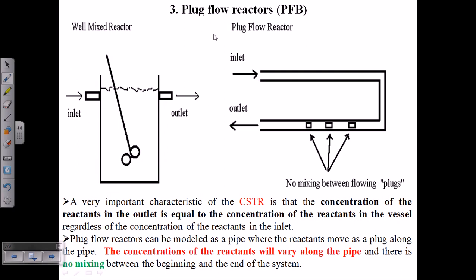In this plug flow bioreactor, this type of bioreactor is used not for liquid processing but for solid handling or solid processing. In wastewater treatment, after taking out all the watery content, we end up with sludge. We need to process the sludge for further usage. Sludge is a semi-solid material.